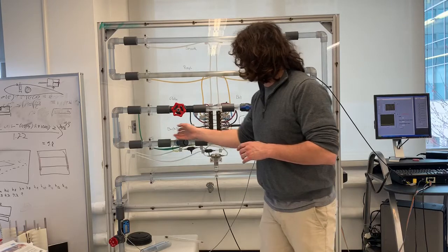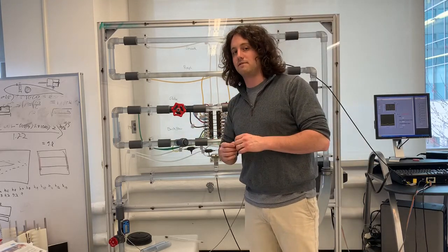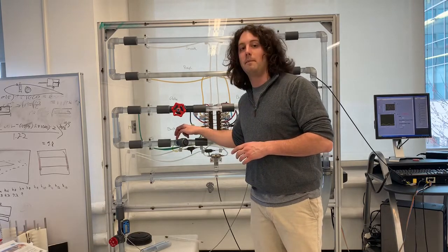And then lastly, with the backflow prevention valve, you have again eight inches of straight pipe and one minor loss element being the backflow prevention valve.